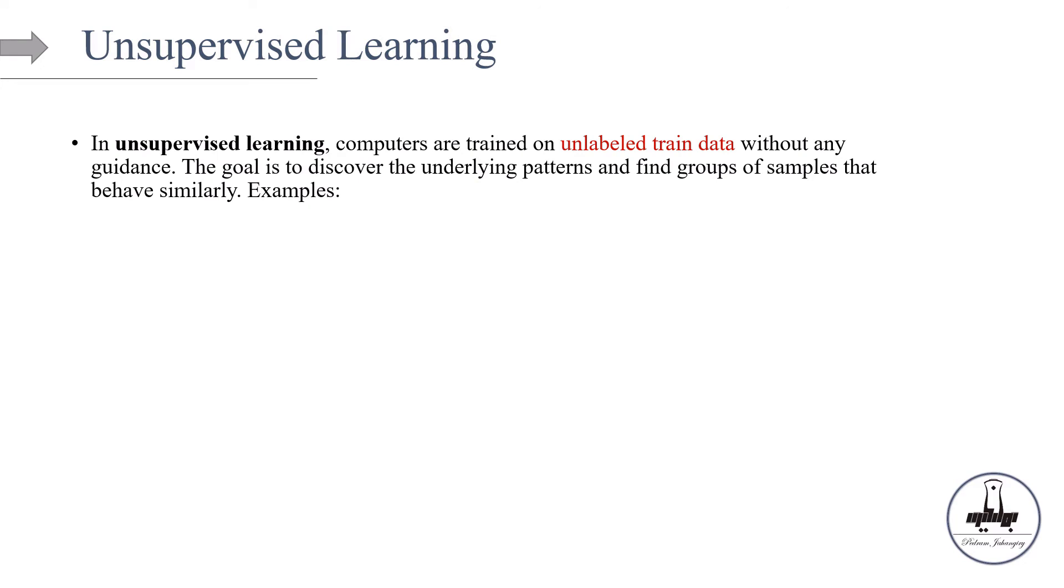OK, so now let's talk about the unsupervised learning, what kind of models we have and what are the examples. So in unsupervised learning, computers are trained on unlabeled data, as we talked about it earlier, without any specific guidance. The goal is to discover the underlying pattern and find groups of samples that behave similarly. Well, the objective is a little tricky. It's a little fuzzy in unsupervised because basically you don't know what you're looking for. It's difficult to know how well you're doing.